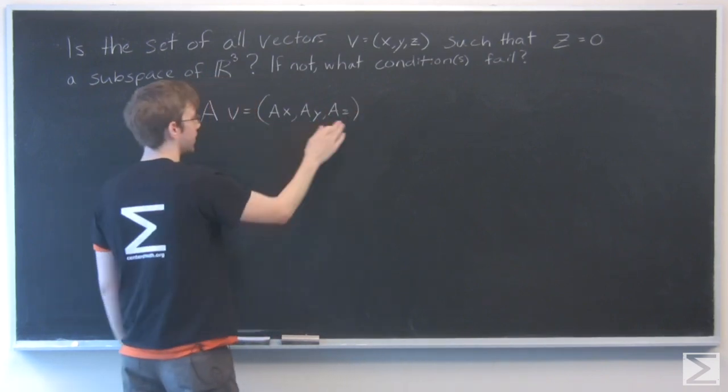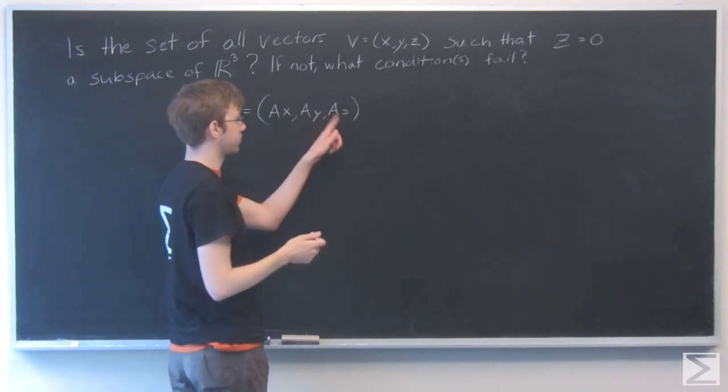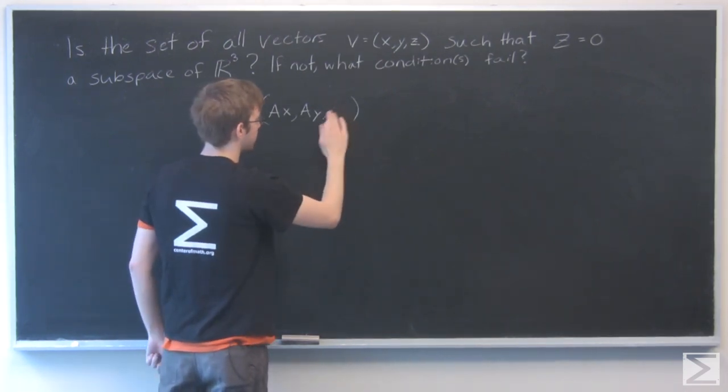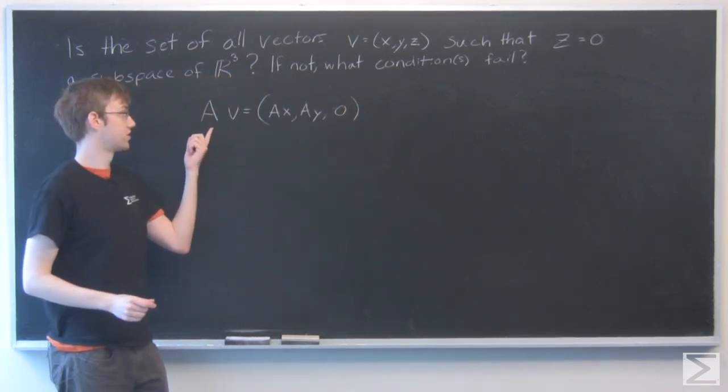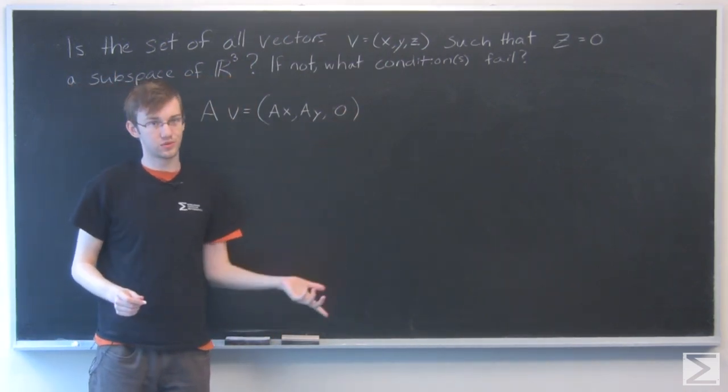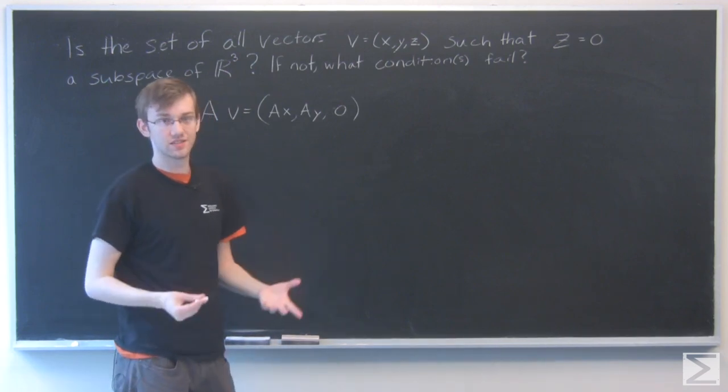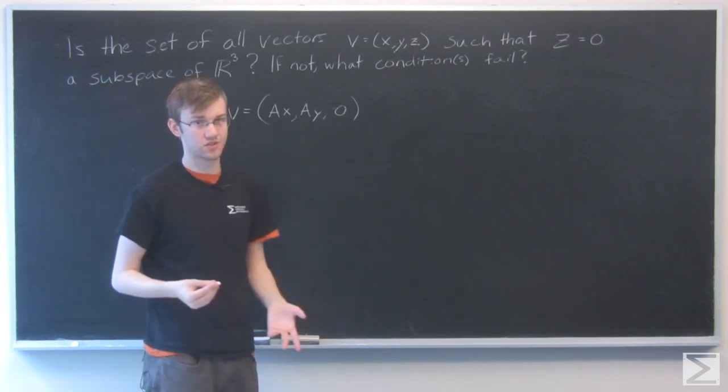Now our original vector v had z equal to 0, so a multiplied by our z, which is 0, that's going to be 0 still. So we can see if we multiply our vector v by scalar a, the z term is always going to stay 0. So yes, this set is closed under scalar multiplication.